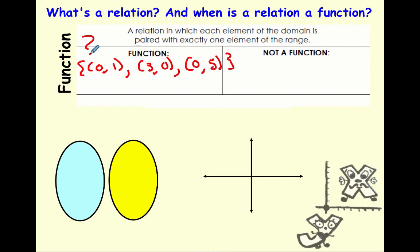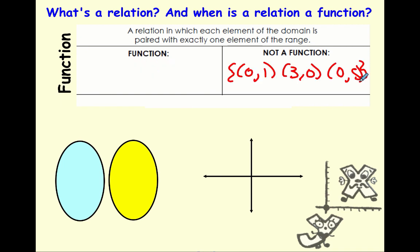What about this function? Well, I have 0 as an input gives me a 1, 3 as an input gives me a 0, so it's still a function. But then I see 0 as an input again, but this time it gave me a 5. It's like using a recipe for brownies, expecting it to be brownies the first time. The second time you did the same recipe, it gave me cookies, not a function. Because that same output gave me two different inputs.